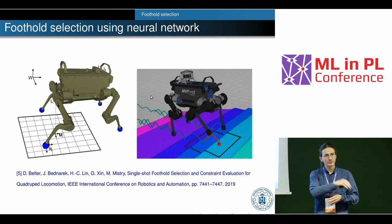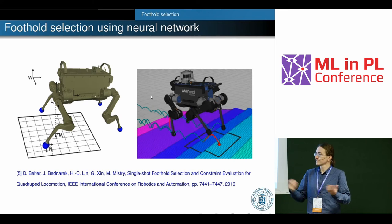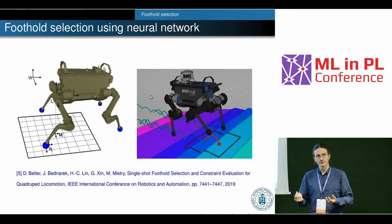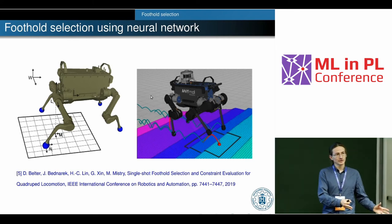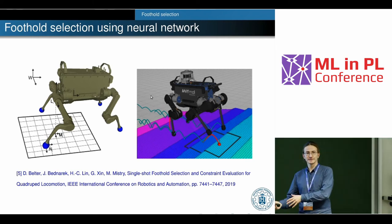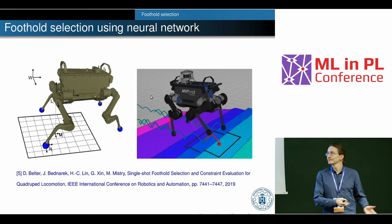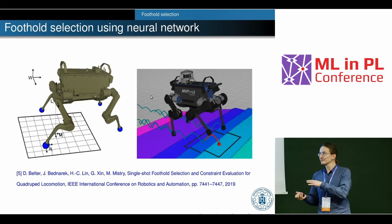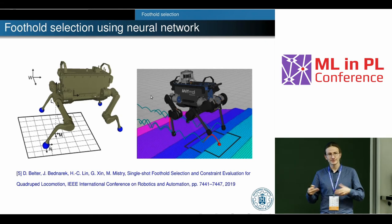In the traditional approach, we evaluate terrain shape, check collisions, and check workspace of the leg sequentially — this is slow. In our method, we trained a neural network that does everything at once: it selects the best footholds and checks all constraints. This is extremely fast. The robot also becomes aware of its own properties and limitations, making it more intelligent.